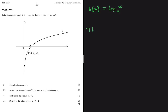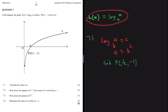There's a logarithmic rule we're going to use: if log base B of A equals C, then A equals B to the power of C. For 7.1, we substitute point P, where the X value is 1/2 and the Y value is -1. Substituting into H(x), we get: -1 = log base a of (1/2). Now it's easy to find a.